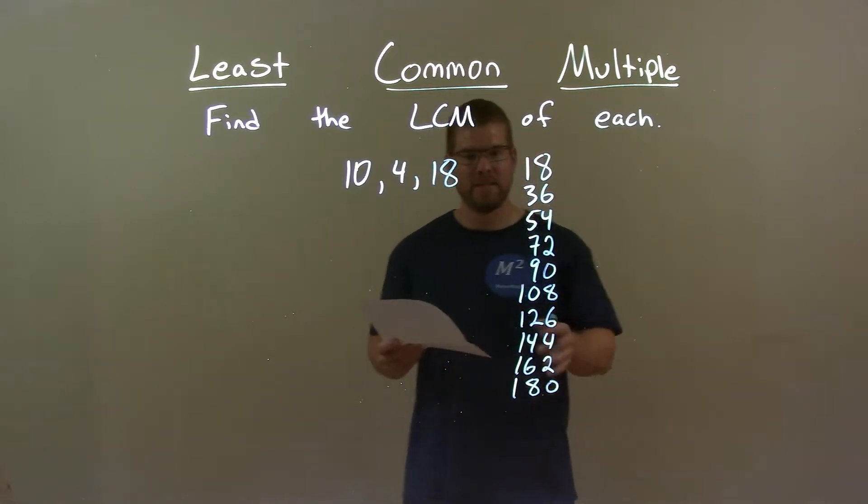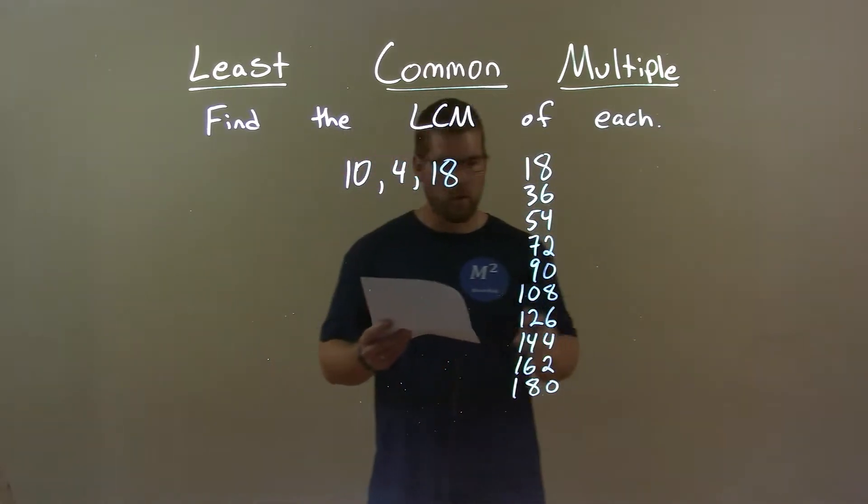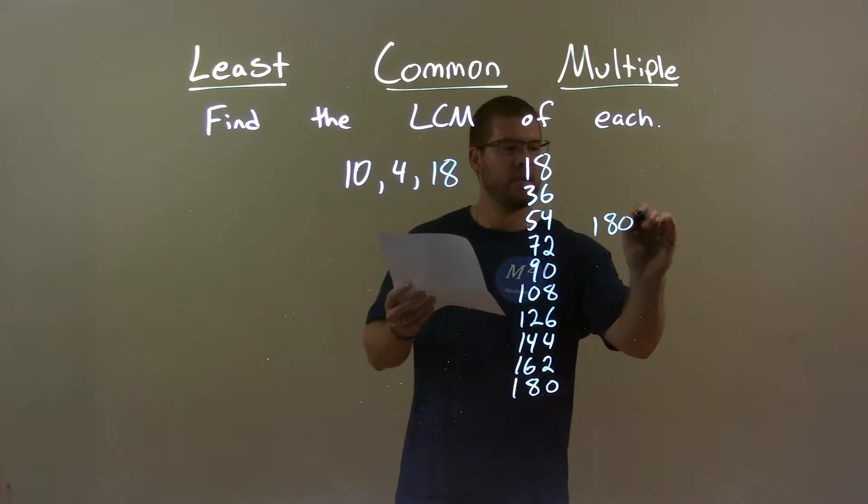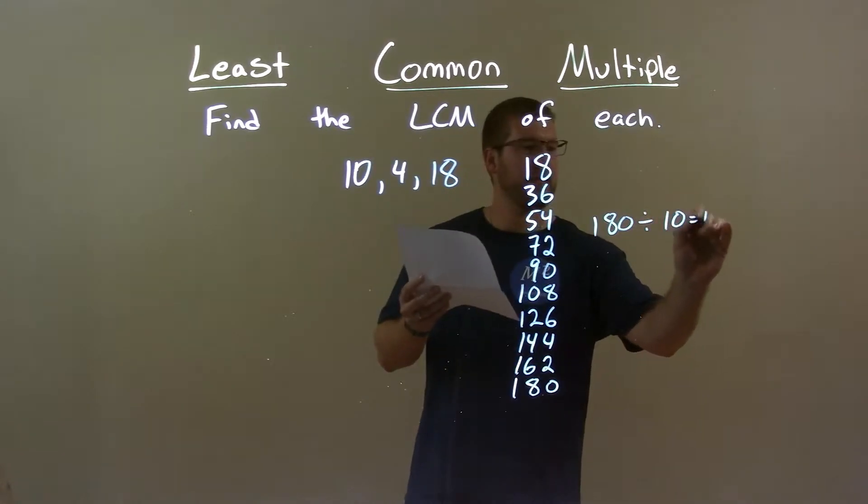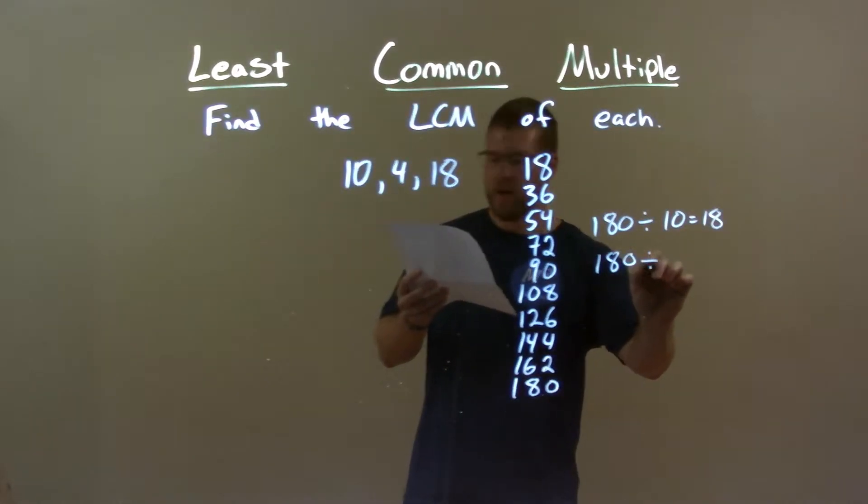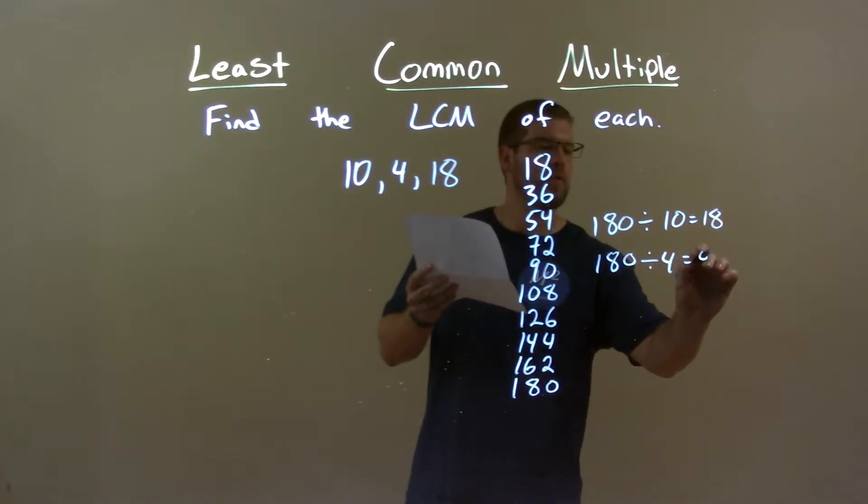It is the first multiple of 18 that's divisible by 10 and 4. 180 divided by 10 is 18, and 180 divided by 4 is 45.